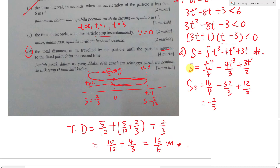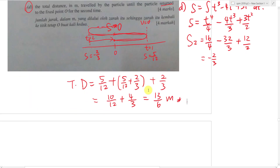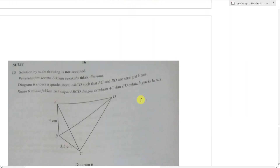The total distance traveled is 13/6 metres. The question didn't require finding exactly when the particle returns to O, just the total distance — so there was no need to solve that complicated equation. The format here is slightly more involved than parts A, B, and C.